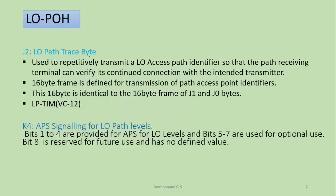J2 is the lower order path trace byte, similar to J0 discussed for regenerator section overhead and J1 for higher order path overhead. This ensures the intended connection between transmitter and receiver but for lower order paths. K4 byte is similar to K1, K2, and K3: K1 and K2 for multiplex section overhead protect the multiplex section, K3 provides APS signaling for the higher order path, and similarly K4 is used for APS protection for VC11 and VC12.